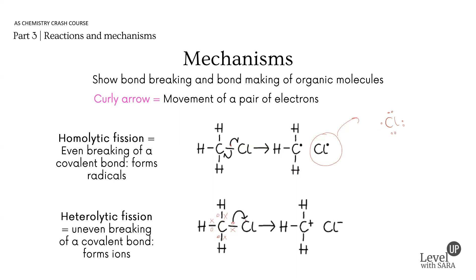If both electrons move to one side — to the chlorine — it ends up with the seven electrons it had before, plus the extra electron from the carbon, giving it a minus one charge. The reason it's only minus one or plus one is because each atom already contributes one electron to the bond, so they either gain one extra or lose just one.